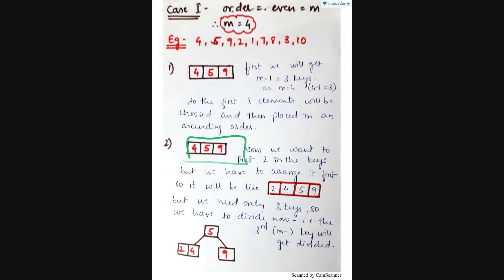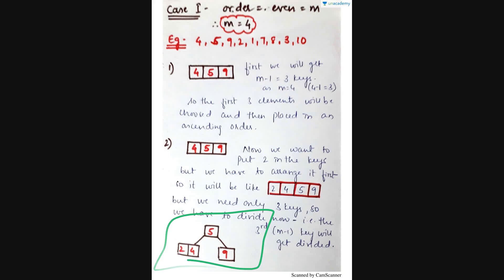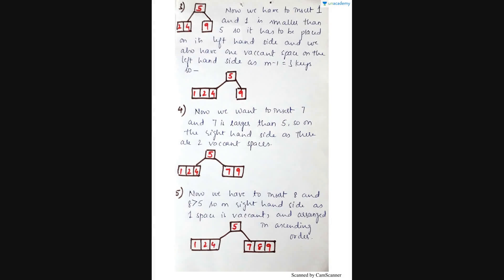We will take the middle element outside. So here 5 will be coming out. As 5 comes out it will go upward and form a separate root node, and the rest of the elements smaller than 5 will be placed on the left hand side and the larger elements on the right hand side. Later after 2, I have to insert 1. Since 1 is smaller than 5 and the left node has only 2 key nodes filled with one key node still vacant, we can directly place 1 there.